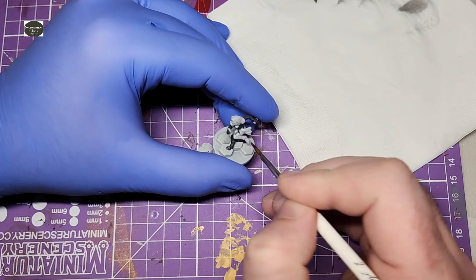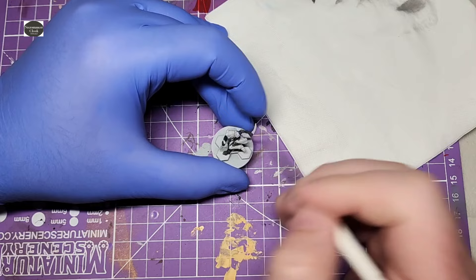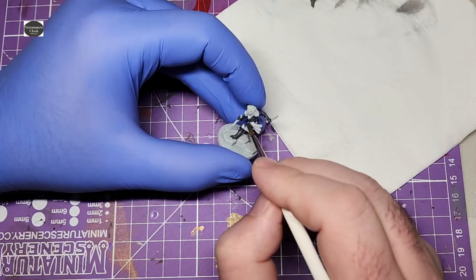I undercoated this model with Grey Seer, which is my default undercoat if I'm not using a specific color for whatever reason. The first step was using Necromancer Cloak for most of the cloth. I decided I wasn't going to follow the box art for this model. I know which mate is playing what, so I figured I'd paint it more to their tastes.